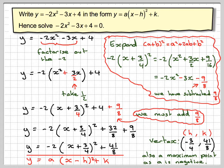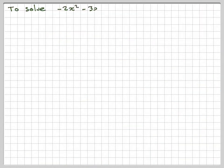Right, we now have to use this idea now to solve the equation minus 2x squared minus 3x plus 4 equals 0. So rewriting it using what we just got. So minus 2 brackets x plus 3 over 4 squared plus 41 over 8 equals 0.